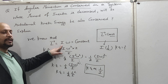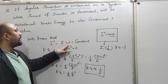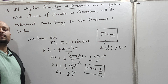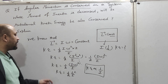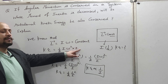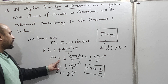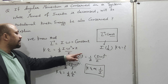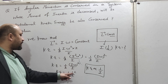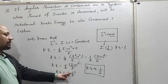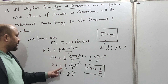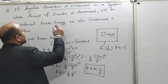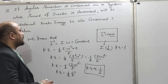Let us review: we know the relation between angular momentum and moment of inertia is L = Iω, and L is given as conserved (constant). Kinetic energy of rotation is ½Iω². Multiplying numerator and denominator by I gives KE = ½I²ω²/I. Since Iω = L, this becomes KE = L²/2I. Since L is constant, kinetic energy is inversely proportional to the moment of inertia.